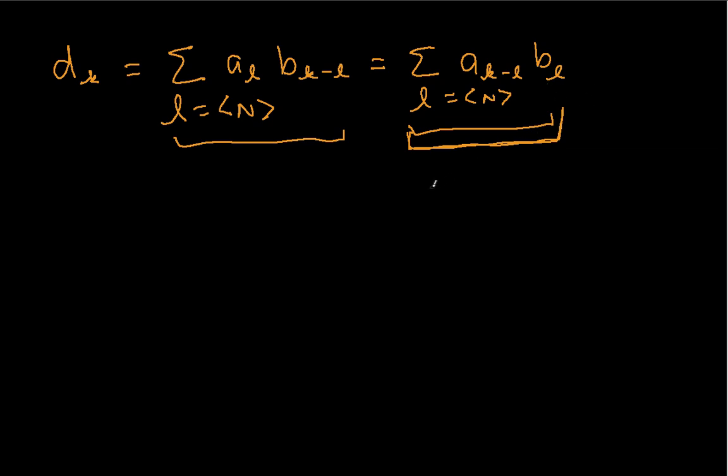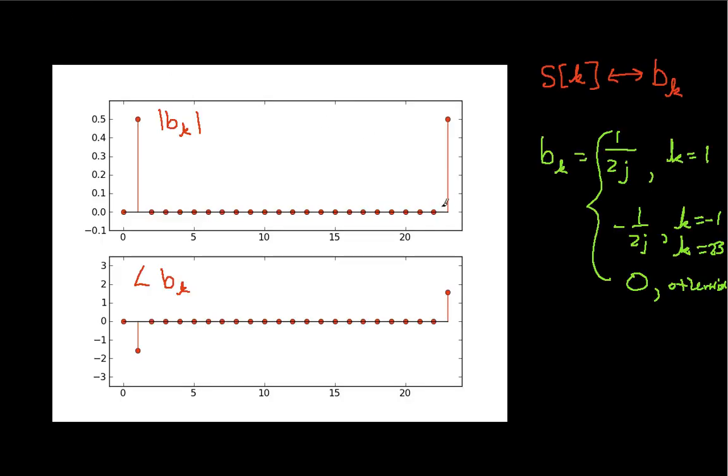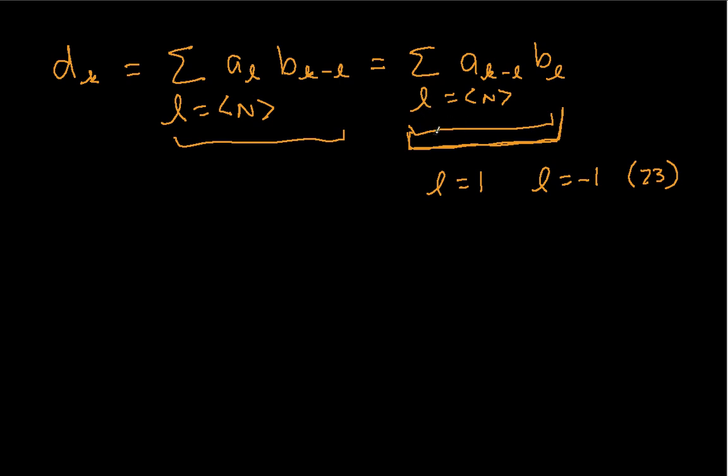Okay. So the values of L for which B sub L is non-zero is L equals 1, and L equals negative 1. And because these B's are periodic, this is also the same as L equals 23. So it shows up in this graph out here at 23, but I'm going to actually call it negative 1 because that's going to make it a lot easier. So to make that work, my sum here will be the sum L going from minus 12 to 11, because I just have to sum over one period. A of K minus L, B of L. Now, B of L is 0 except when L equals 1. So when L equals 1, I have A of K minus 1 times B of 1.